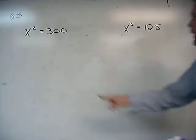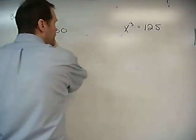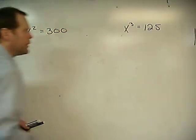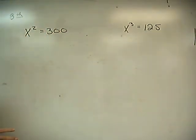Next problem up here. We have x squared is equal to 300 and we have x cubed is equal to 125. So we have two problems up here.